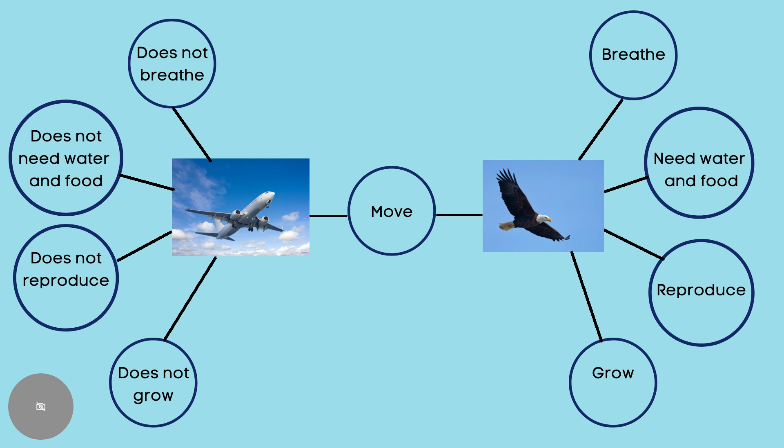The aeroplane does not grow, but the birds grow. The bird is a living thing because the bird has all the characteristics of living things, which are: breathe, need water and food, reproduce, grow, and move. However, the aeroplane only has one of the characteristics of a living thing. So, the aeroplane is a non-living thing.